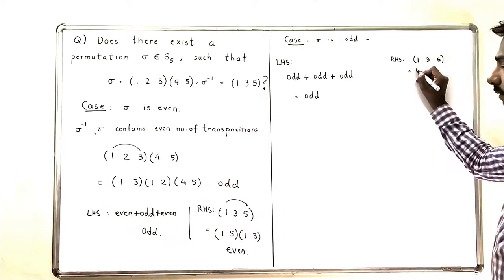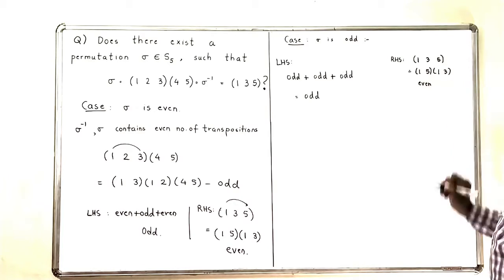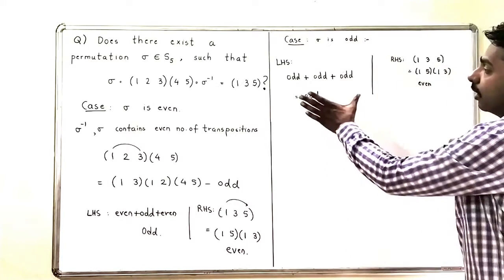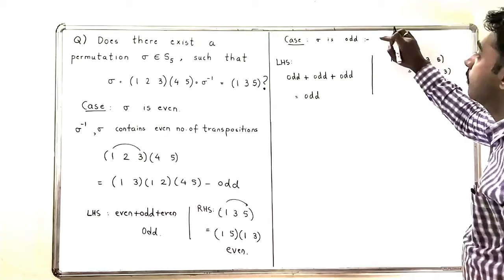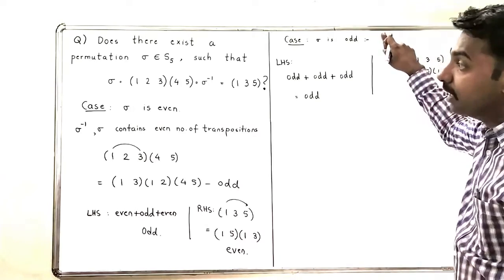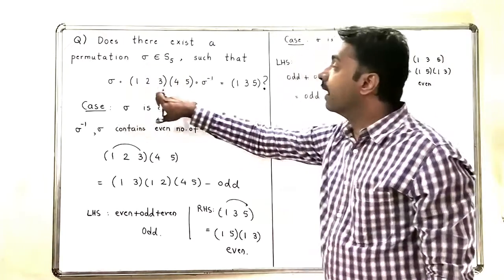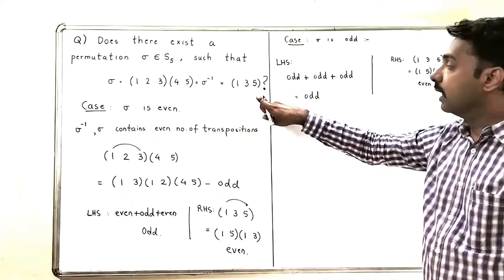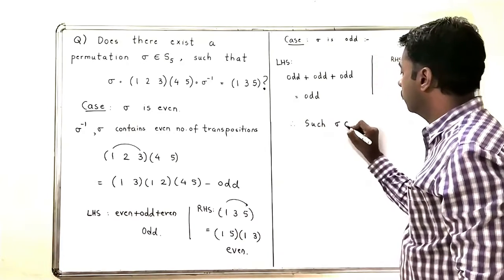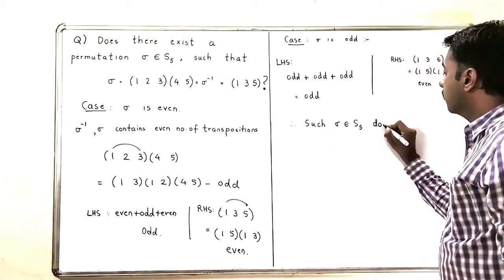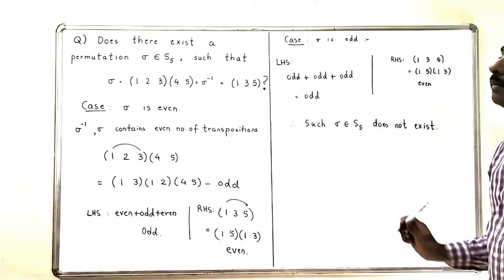The right-hand side is (1 3 5), which equals (1 5)∘(1 3) — an even permutation. So again, the left-hand side is odd and the right-hand side is even, which is not possible. This means σ cannot be odd, and it cannot be even. Therefore, no such σ exists in S₅, and this concludes the problem.